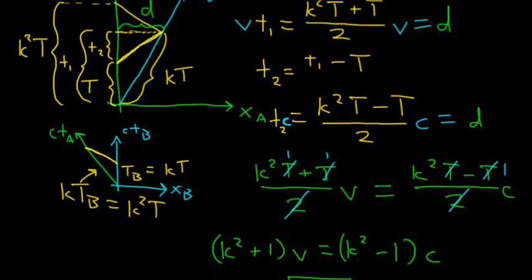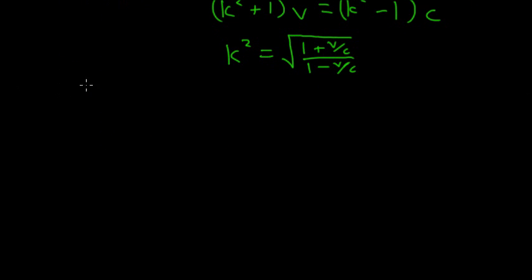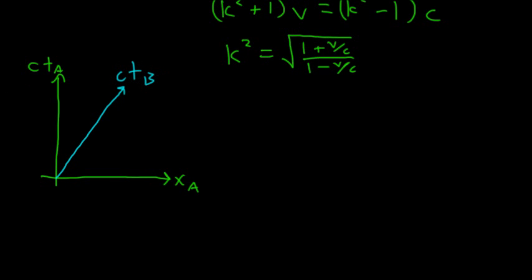Now, how is that going to help us find out what the Doppler shift is? Well, let's draw a fresh picture. We have our spatial axis of A and our time axis of A, and we have observer B that is moving. So this is ct_B.